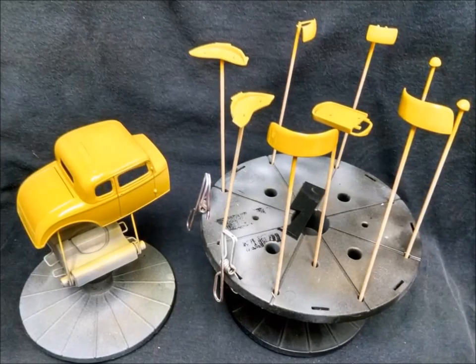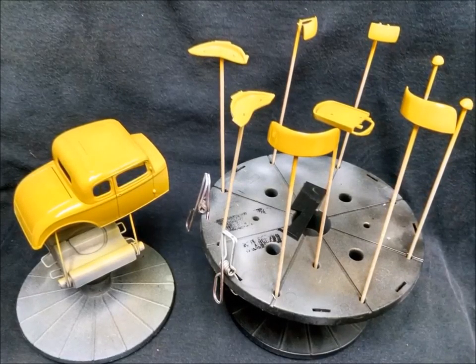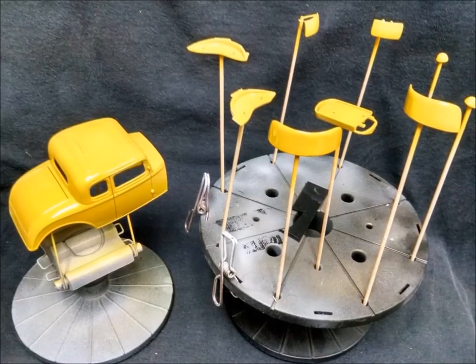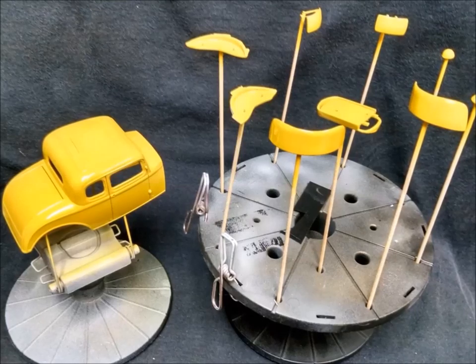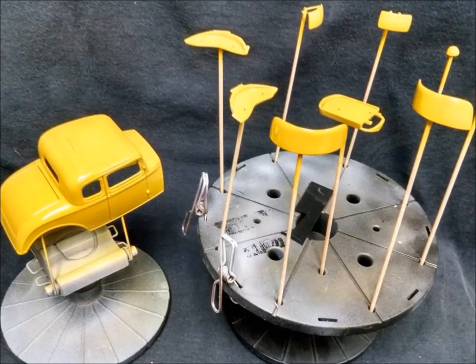After the roof panel had dried several days, it was re-masked the other way using bare metal foil and regular masking tape. And then the rest of the parts were prepped and readied and then shot with the Boyd's yellow Model Master paint.